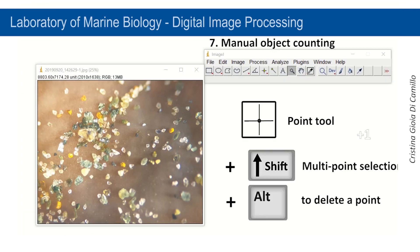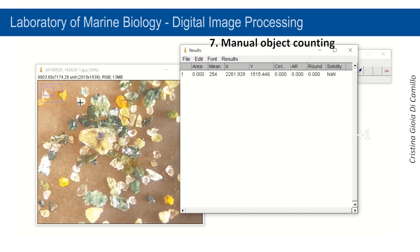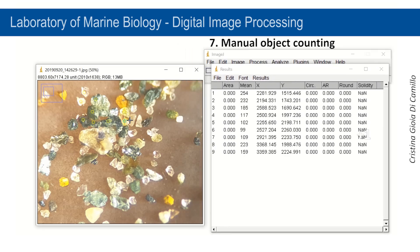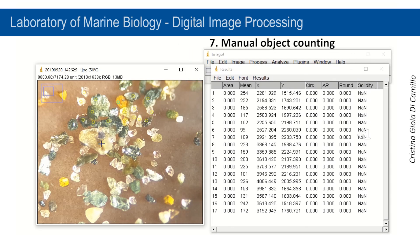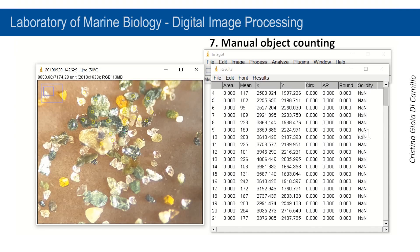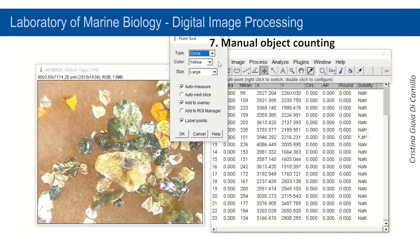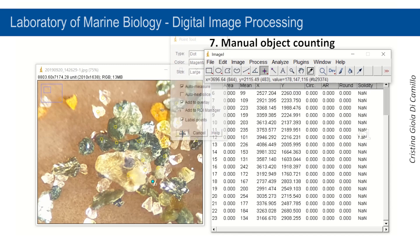When it is not possible to automatically count objects, you can use the Point tool. Shift-click while using the Point tool to obtain a multiple selection. You can choose the color and size of markers by double-clicking on the Point tool in the toolbar. This is very useful to distinguish objects with different characteristics or different species. Moreover, use of markers should avoid double-counting.